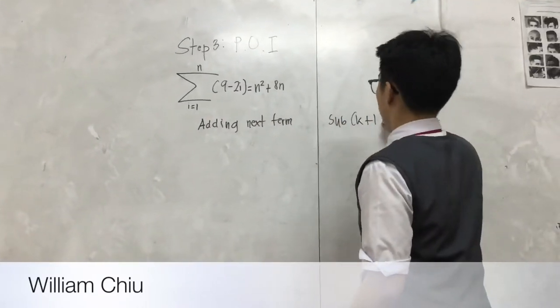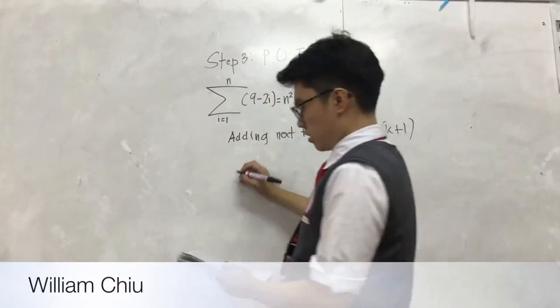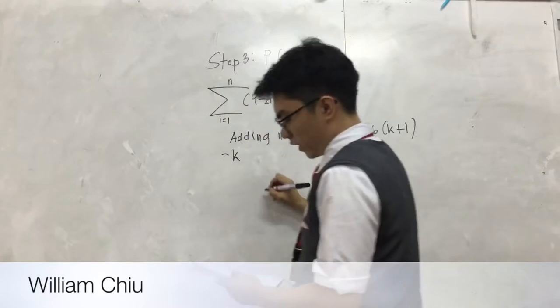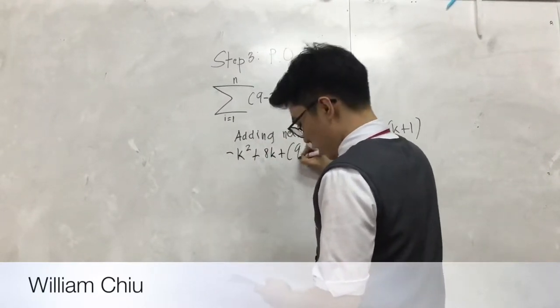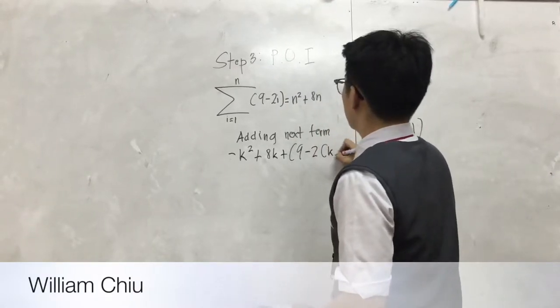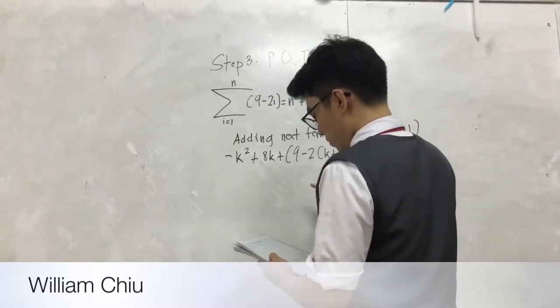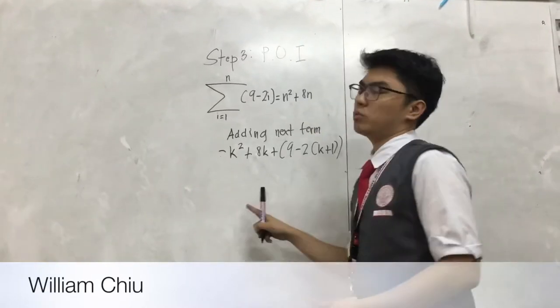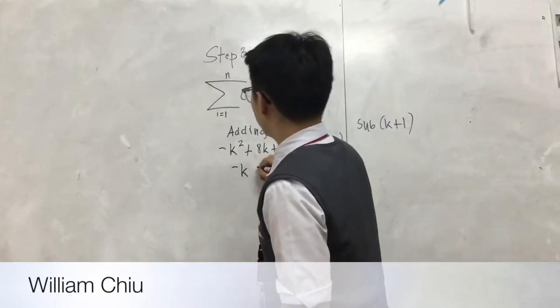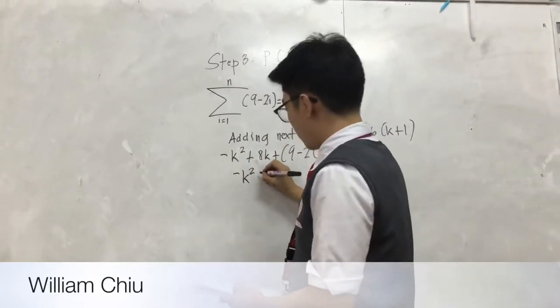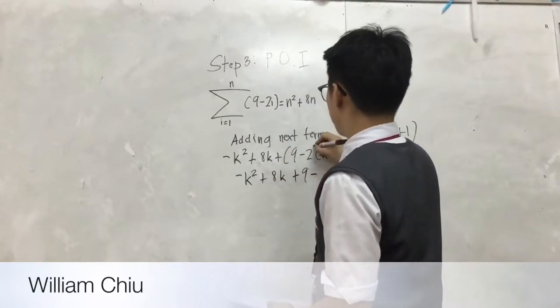First we add the next terms. We're replacing all variables by k, so the equation will be negative k squared plus 8k plus 7 plus 9 minus 2 times (k plus 1). We must simplify this. Simplifying this we will get negative k squared plus 8k plus 9.